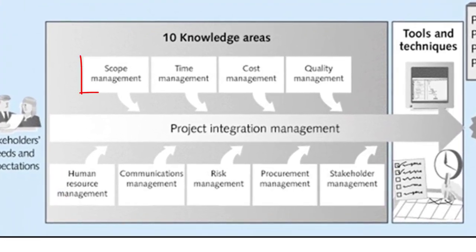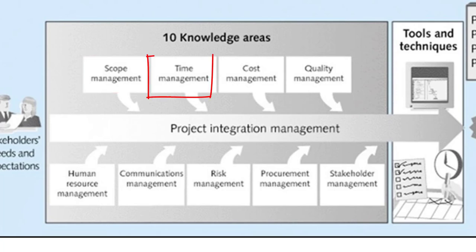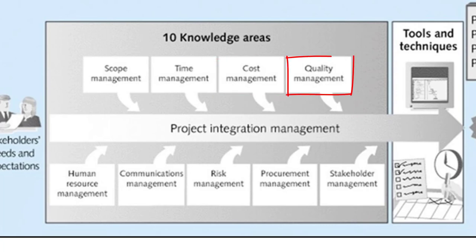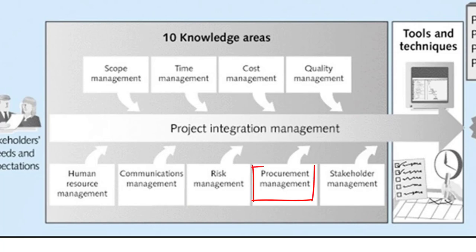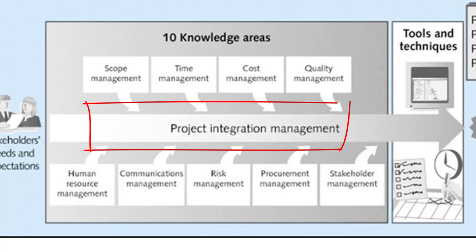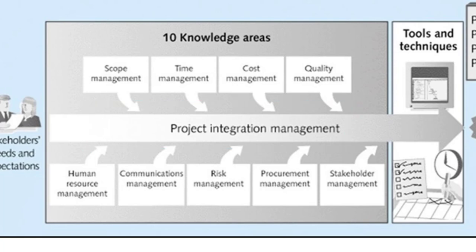The 10 knowledge areas are: scope management, time management, cost management, quality management, resource management, communications management, risk management, procurement management, and stakeholder management — with integration in the centre, showing that all of these knowledge areas are deeply connected. Each of these areas needs to be carefully planned and managed.